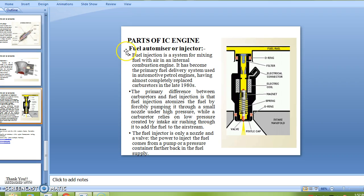Next part of the IC engine is fuel atomizer or injector. Fuel injection is a system for mixing fuel with air in an internal combustion engine. It has become the primary fuel delivery system used in automotive petrol engines, having almost completely replaced carburetors in the late 1980s.